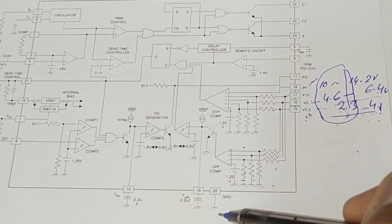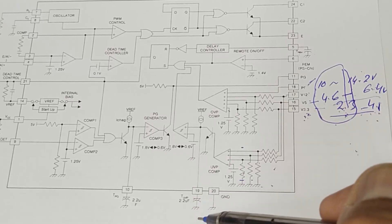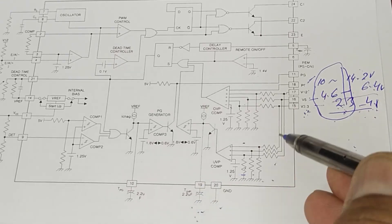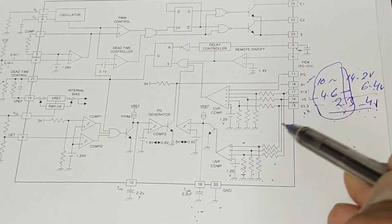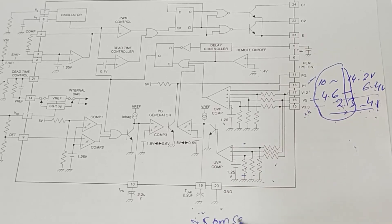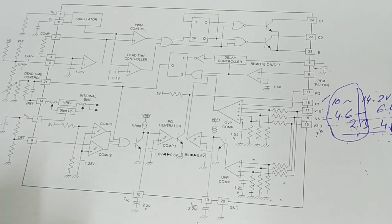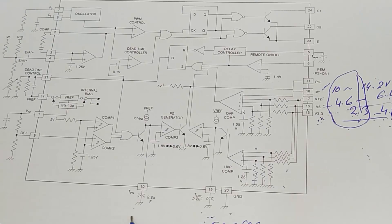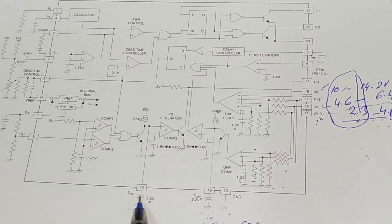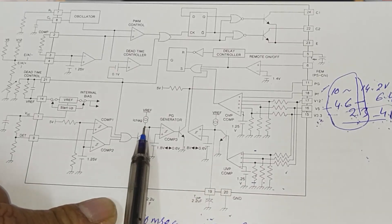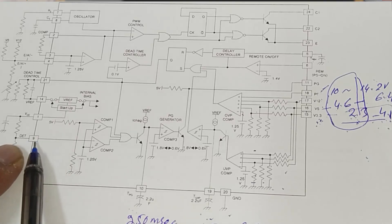Pin 20 is ground. Pin 19 is the under-voltage protection timer - normally a 2.2 µF capacitor is connected here, providing a 250 millisecond delay before turning off the power supply when any pin goes below its voltage threshold. This prevents immediate shutdown. Pin 18 is TPG (time power good signal) - also normally a 2.2 µF capacitor connected here, providing a 250 millisecond time delay for the power good signal. When 5 volts are good, the detect pin activates.